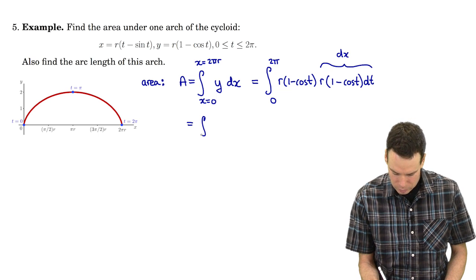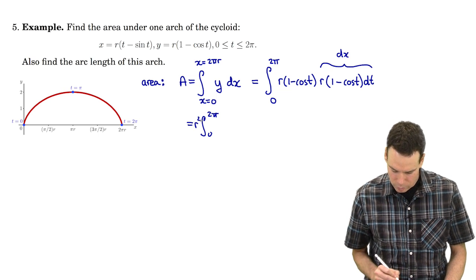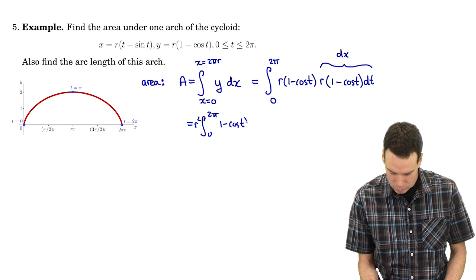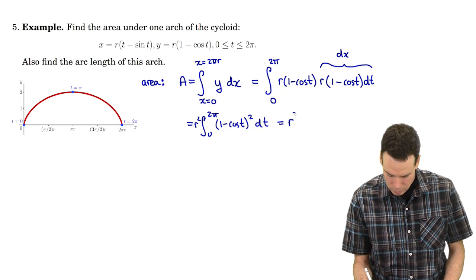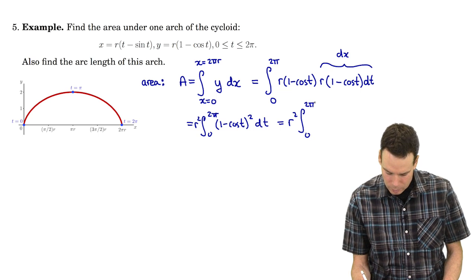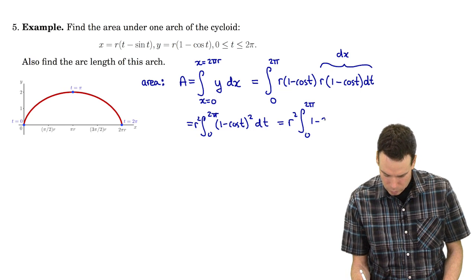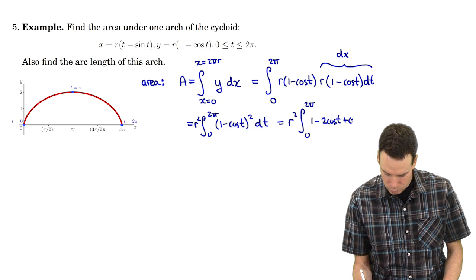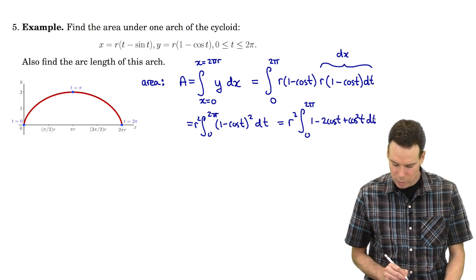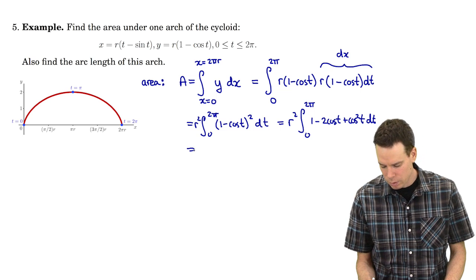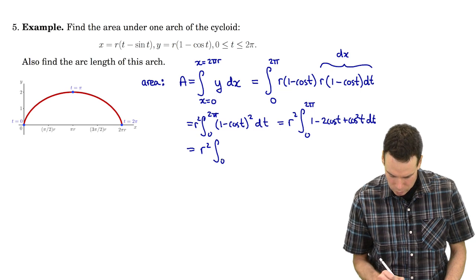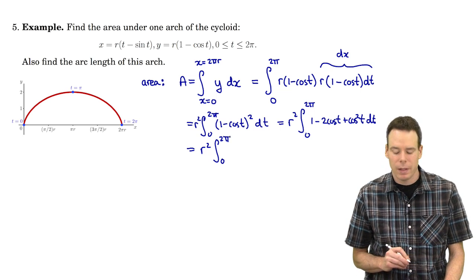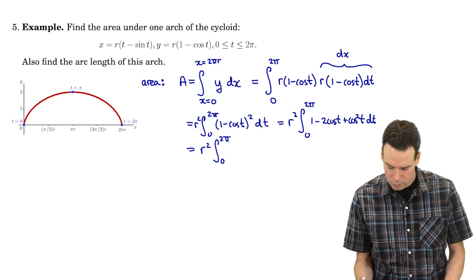This becomes the integral from 0 to 2π of r² times (1 minus cos t)² dt. We go to work on the integrand: expanding gives 1 minus 2cos t plus cos²t dt. There's no problem integrating the constant 1 or the cosine, but cos² will cause an issue — we handle it using the double angle formula for cosine.